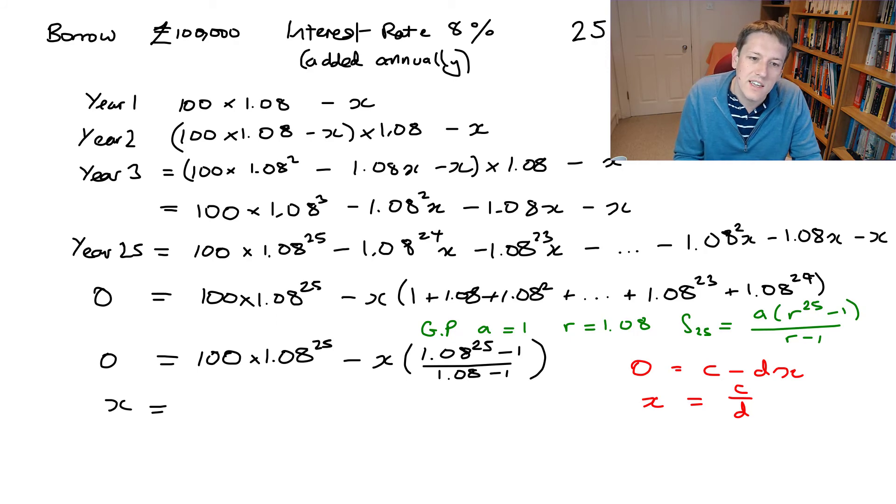And x here is equal to then 100 times 1.08 to the 25 divided by this number here. So if I divide by a fraction and multiply by its reciprocal, so I can just say times 1.08 minus 1. So that's 0.08 over 1.08 to the 25 minus 1.